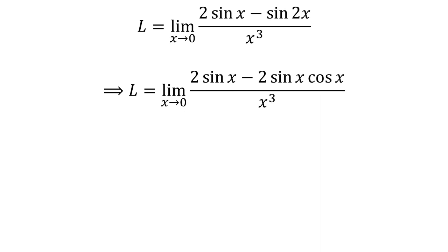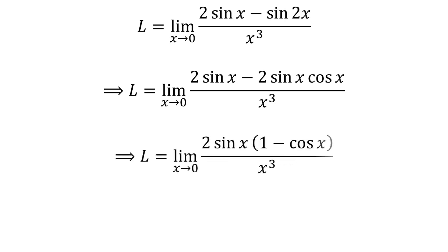We know sin of 2 times x is equal to 2 times sin of x times cosine of x. This identity has been verified in the video appearing in the upper right corner, and the link is also given in the description. Here, I have replaced sin of 2 times x by 2 times sin of x times cosine of x. By taking out the common factor 2 times sin of x, we get L is equal to limit of 2 times sin of x times 1 minus cosine of x upon cube of x as x approaches 0.